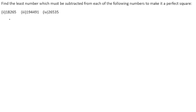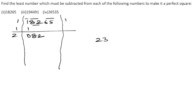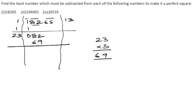Now let us solve the second problem: 18265. We put the bars over pairs of digits. We get 1; since 1×1 = 1, write 1. Then 1 + 1 = 2, remainder 0, bring down 82. In the 2-table the nearest number is: 2×4 = 8, but taking 3 gives 3×3 = 9 and 3×2 = 6, so with 3 we get 69.